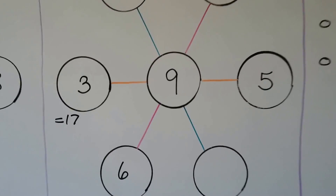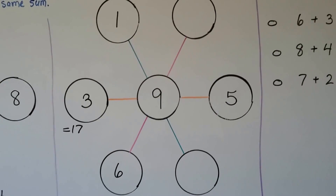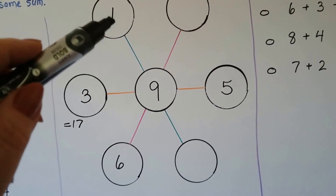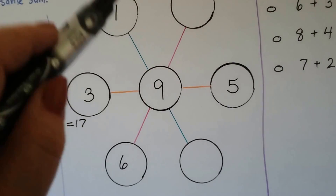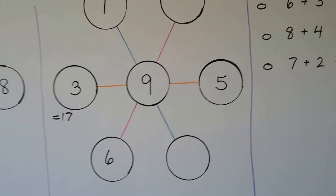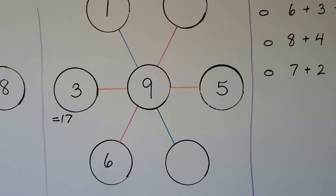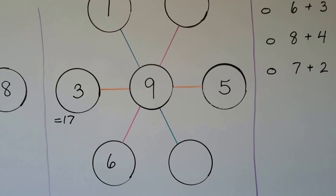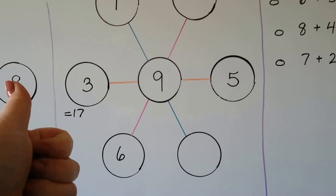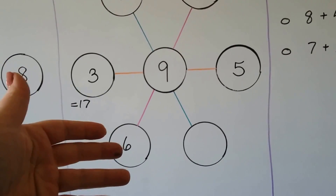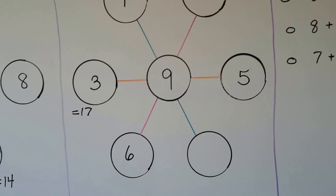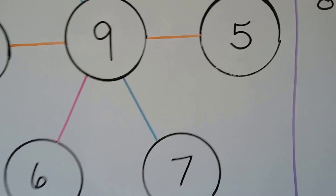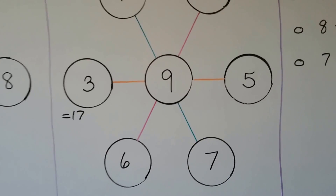That means the other lines need to equal 17. If we had 1 plus 9, that would be 10. So what number could go here so that this line equals 17? What could we add to 10 to make 17? Counting on from 10, that takes 7 more. So 1 plus 9 plus 7 is equal to 17.